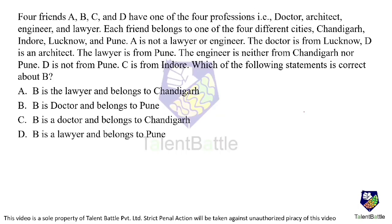Now we will solve a question from the concept of data arrangements. Four friends A, B, C, D have four professions: Doctor, Architect, Lawyer, and Engineer. Each friend belongs to one of four different cities: Chandigarh, Indore, Lucknow, and Pune. The clues are: A is not a lawyer or engineer; the doctor is from Lucknow; D is an architect; the lawyer is from Pune; the engineer is neither from Chandigarh nor Pune; D is not from Pune; C is from Indore. We need to identify which statement about B is correct.